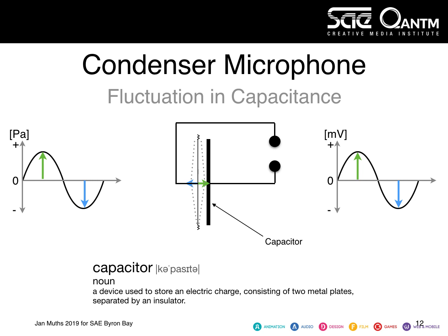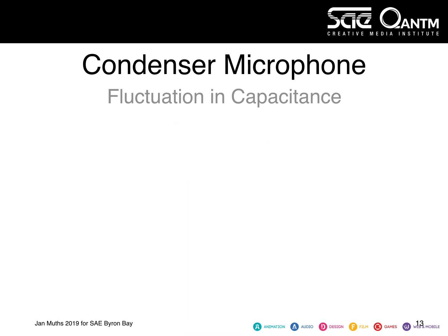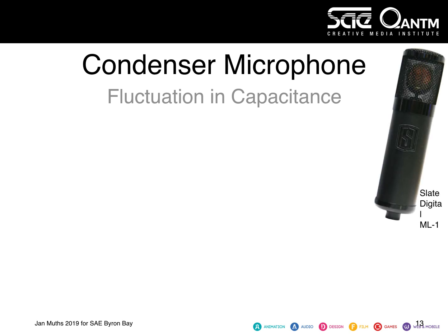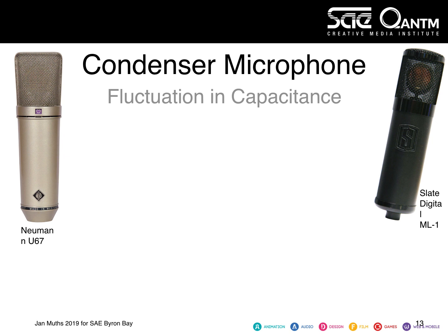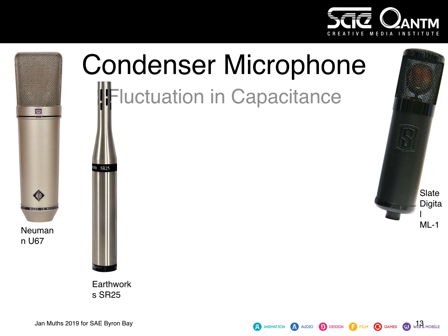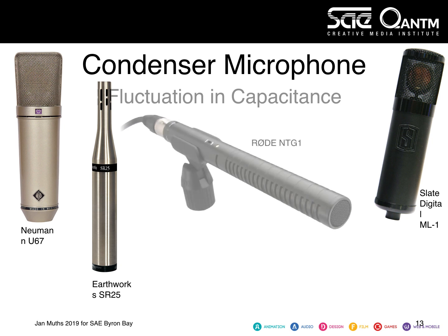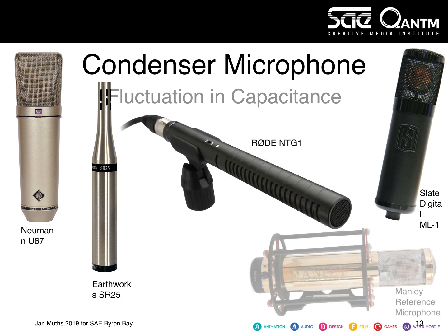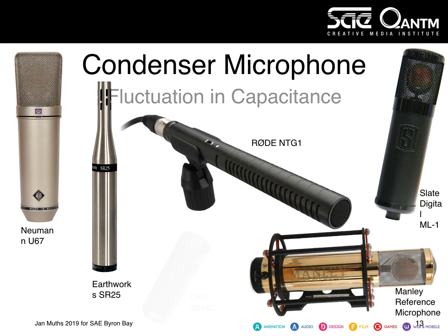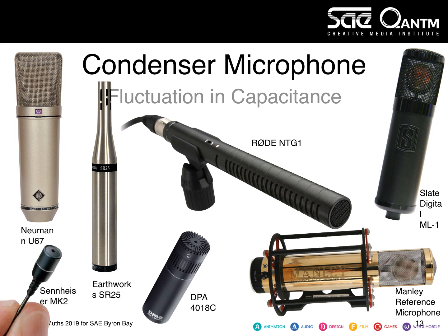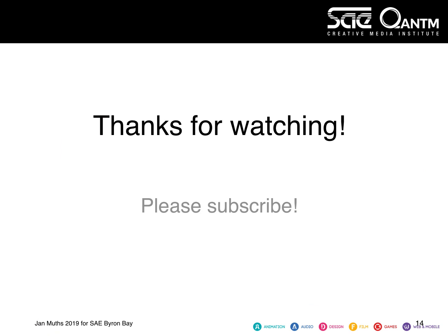Examples of condenser microphones include the fairly modern Slate Digital ML-1, the vintage Neumann U67, the Earthworks RS-25, the Rode NTG-1, the Manley reference microphone, the DPA 4080C, and the Sennheiser MK2 capsule. Thank you for watching — I'd like to invite you to continue with Part 2.